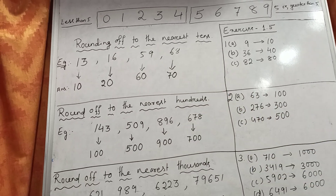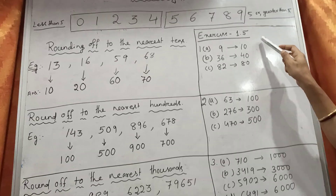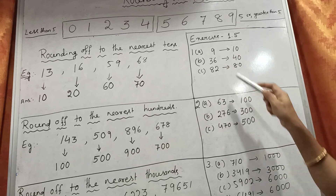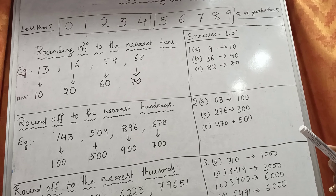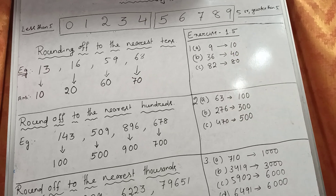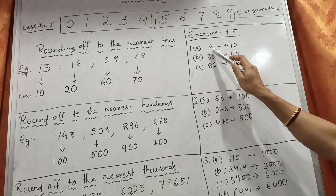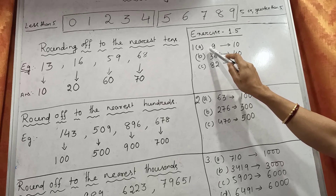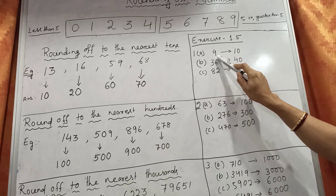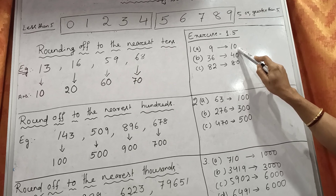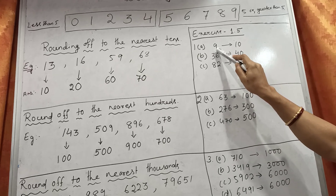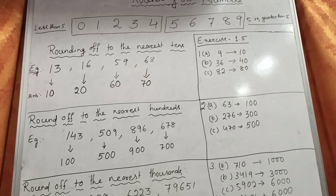In your book Exercise 1.5 there are 4 questions. I have done 3 questions for you. See the first one. The question is: round up to the nearest 10. The first one, part A, is 9. Since 9 is a 1-digit number, 9 is in the units place and the tens place is not given, meaning the tens digit is 0. Since 9 is more than 5, we write 0 in the units place and the tens place becomes 1. So the answer is 10 — 9 is nearest to 10.